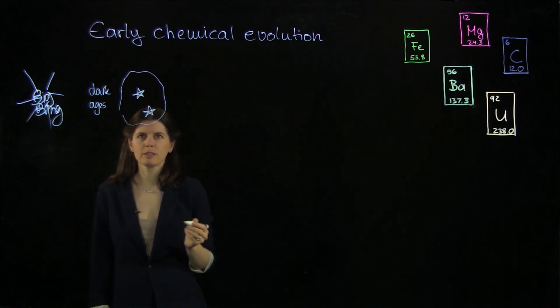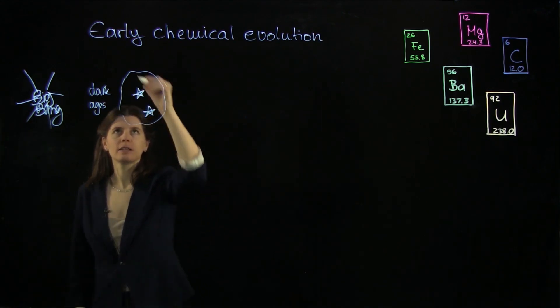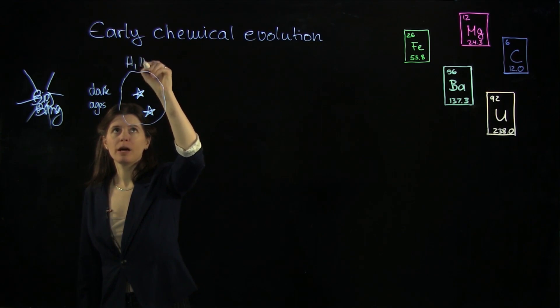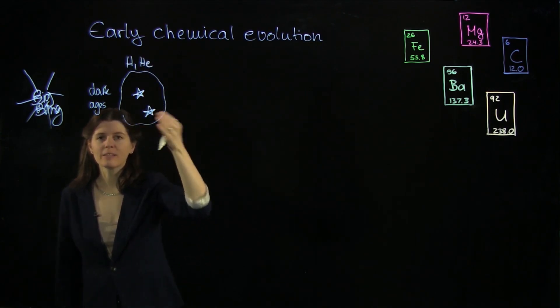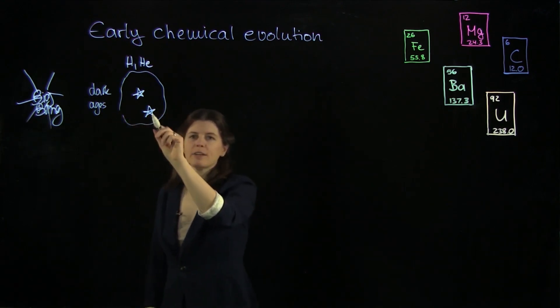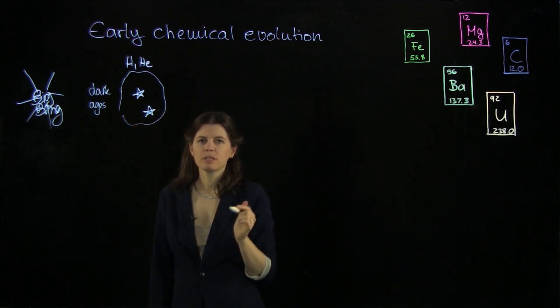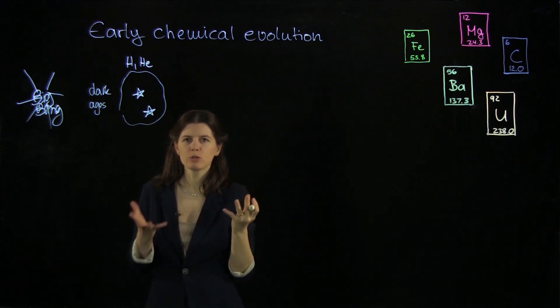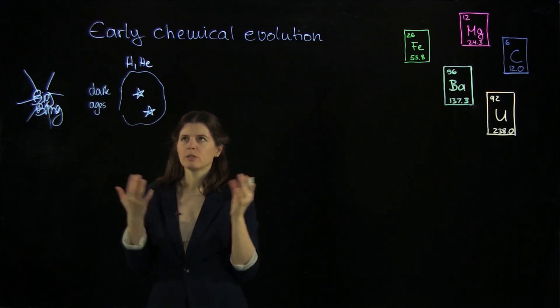Here are two of the first stars. And they were made just from hydrogen and helium, because the gas was just hydrogen and helium. But for energy generation purposes, these stars needed to have nuclear fusion go on in their cores to produce energy.